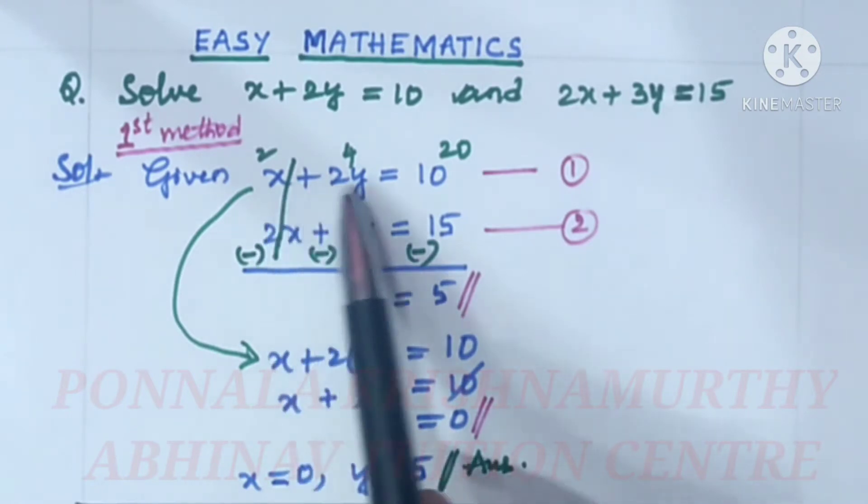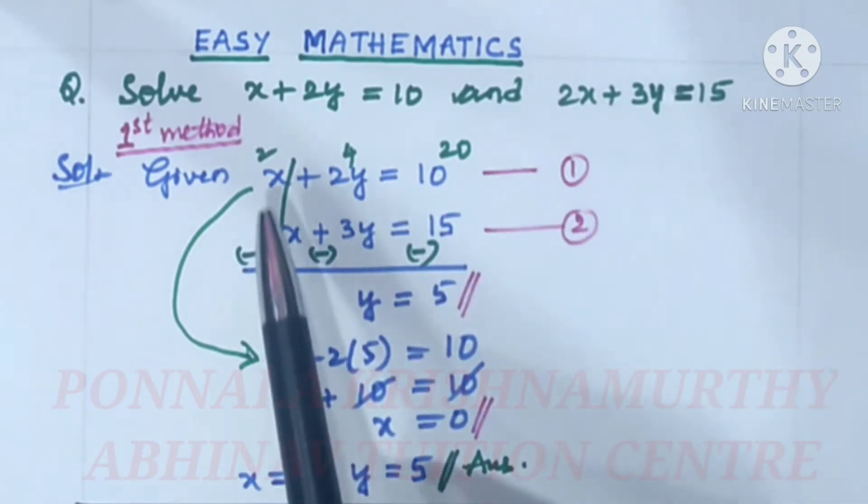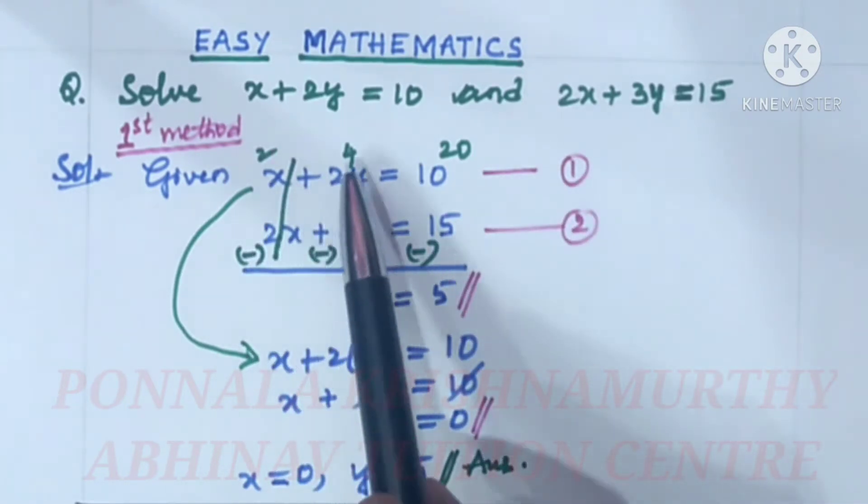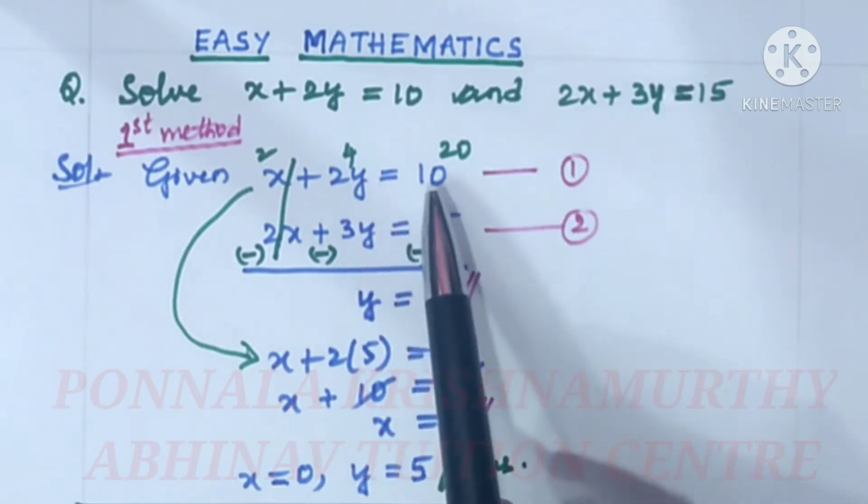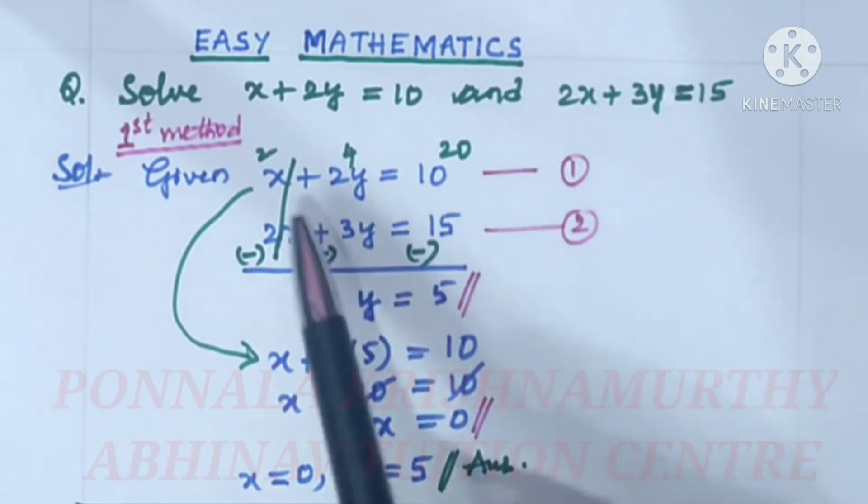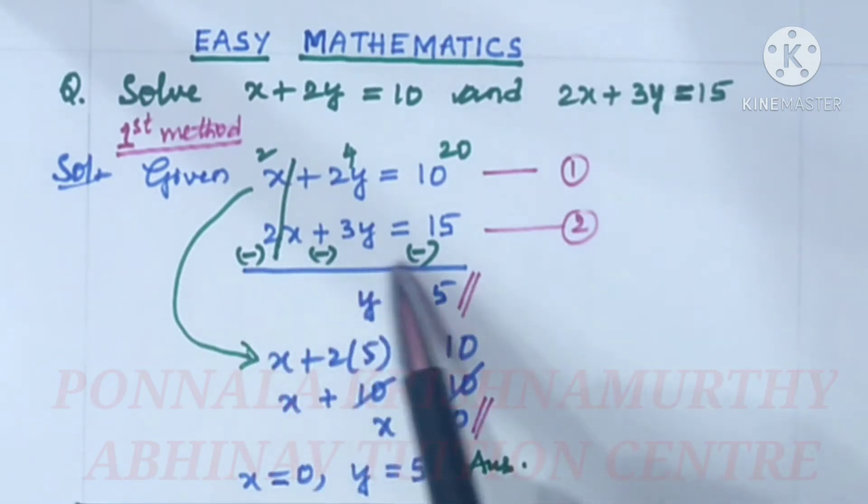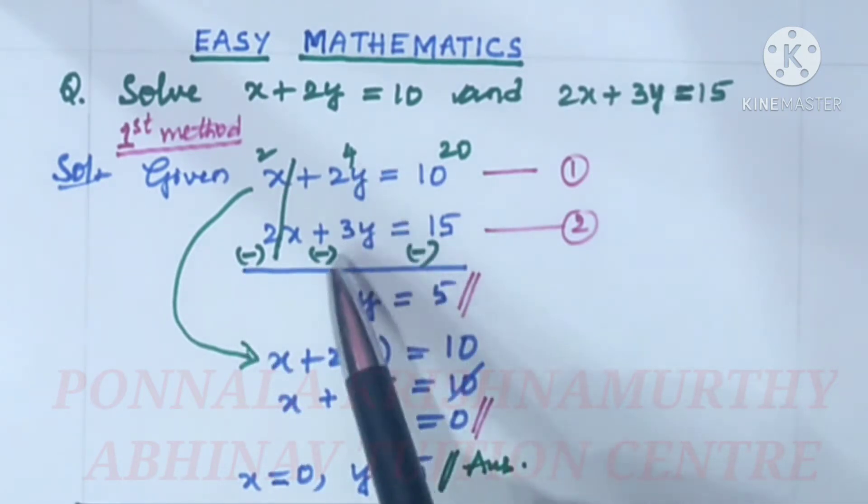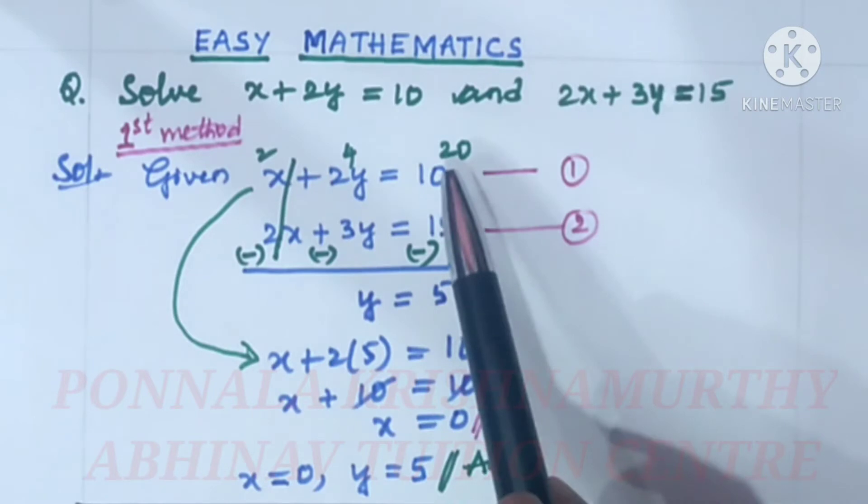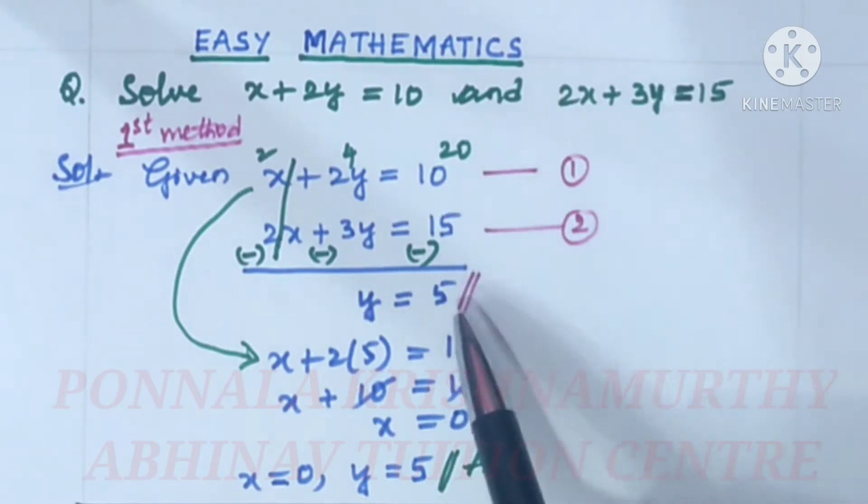Then multiply the whole equation by 2. 2x plus 2 times 2 is 4y and 2 times 10 is 20. Now these two are cancelled after changing the signs. 4y minus 3y is y. Now this is 20 minus 15 is 5. Y is equal to 5.